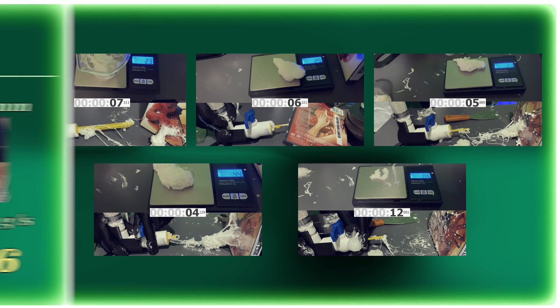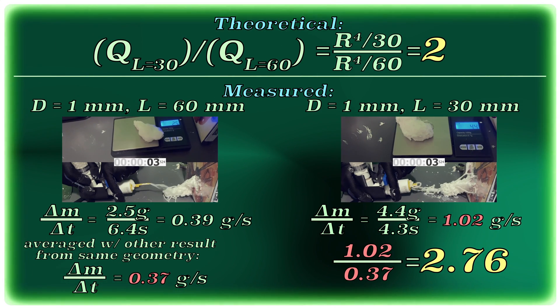Between two tubes of the same diameter, but where one of the lengths is half the other, the law states that the shorter tube should have twice the flow rate, and I measured a ratio of 2.76.